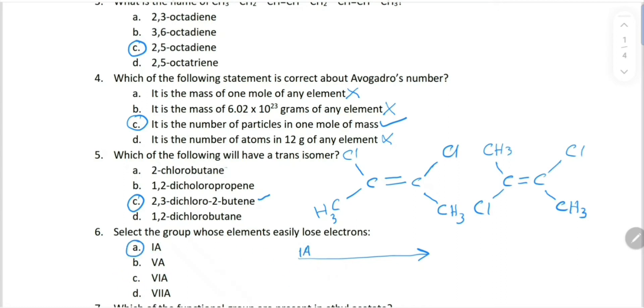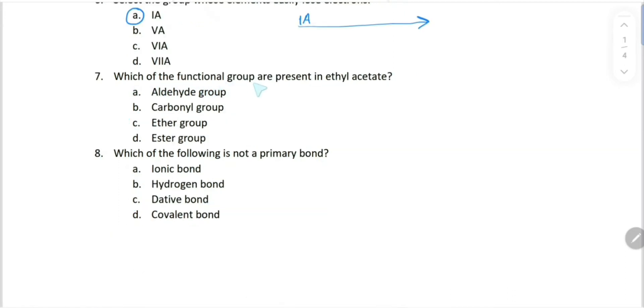Which of the following functional groups are present in ethyl acetate? This is ethyl acetate: CH3-C double bond O, then O, then C2H5. This is ethyl acetate and it is an ester, so ester group is there. Choice D.